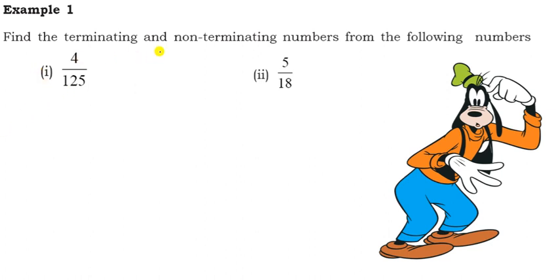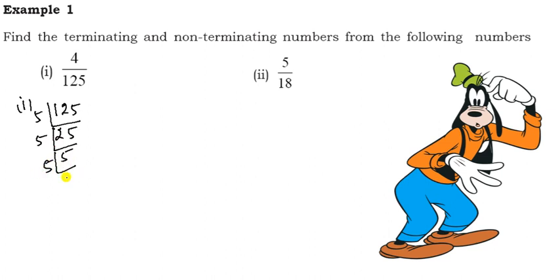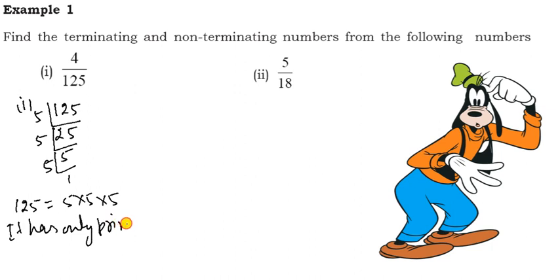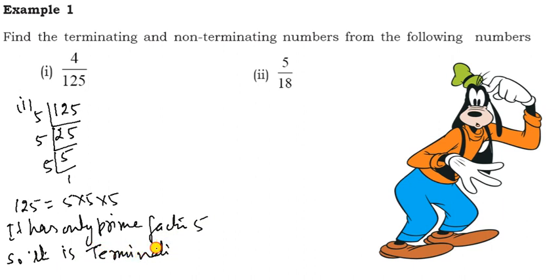If the denominator has only 2 or 5 as prime factors, it is a terminating decimal. Let us start the examples. Find the terminating and non-terminating numbers. First: 4 upon 5. The denominator is 125. Factorising: 125 = 5 × 5 × 5. It has only prime factor 5, so it is a terminating decimal.